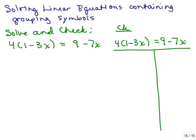We're going to solve and check some more problems that contain grouping symbols like parentheses. Here's the problem: solve and check 4 times the quantity 1 minus 3x is equal to 9 minus 7x.